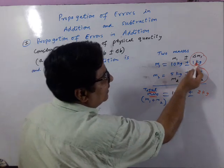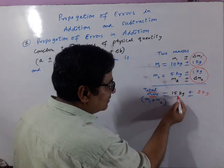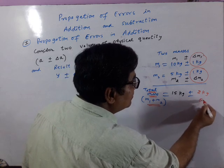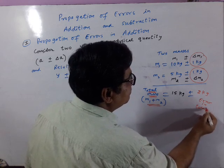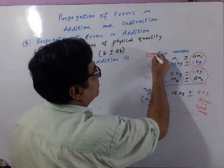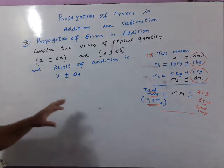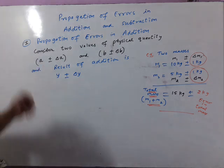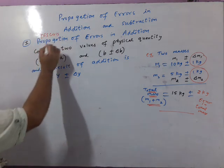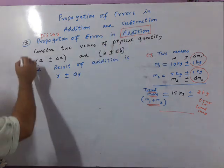To recap: M1 is the first mass, delta M1 is error in M1, M2 is the second mass, delta M2 is error in M2. So the total mass is M1 plus M2, and the error in total mass is delta M1 plus delta M2. This was the numerical example of the topic. Now, how to find this result theoretically — let's discuss propagation of errors in addition.